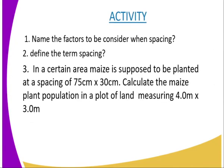We have come to the end of today's lesson. I will give you some activity. Question one: name the factors to be considered when spacing. Question two: define the term spacing. Question three: in a certain area, maize is supposed to be planted at a spacing of 75 cm by 30 cm; calculate the maize plant population in a plot of land measuring 4.0 meters by 3.0 meters.